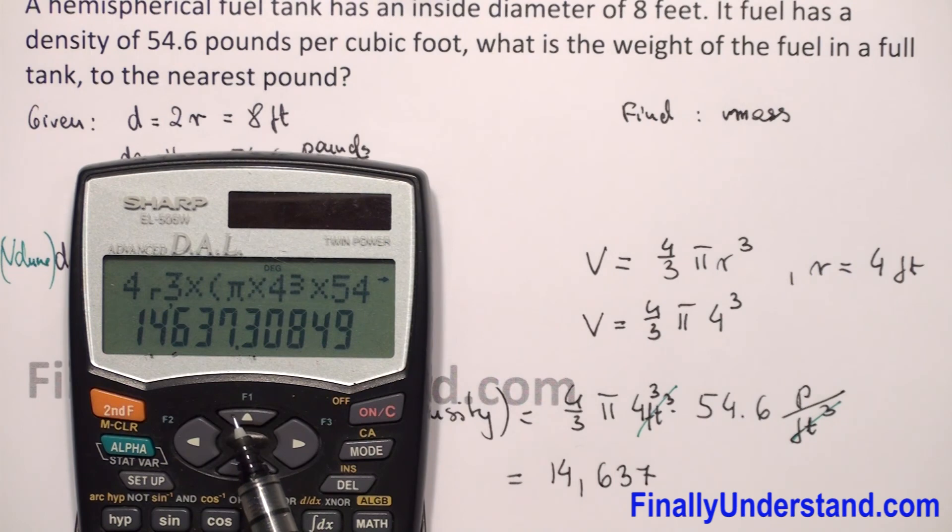Because we need to round to the nearest pound, we check the digits after the decimal point. 3 is less than 5, so we just copy what we have before the decimal point. The answer is 14,637 pounds.